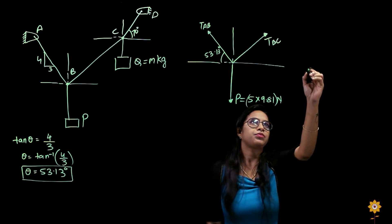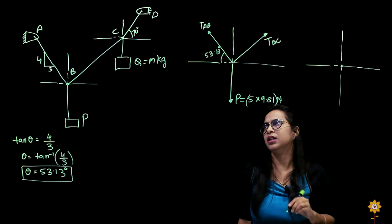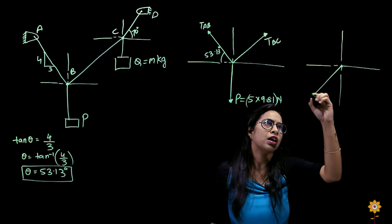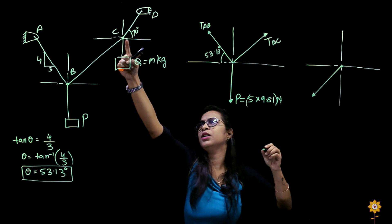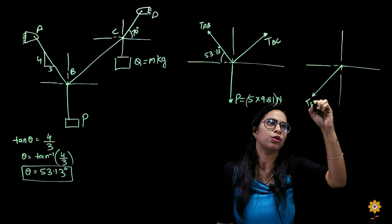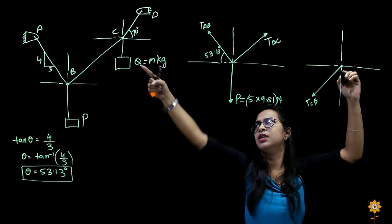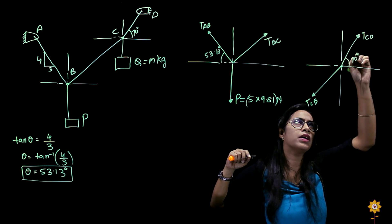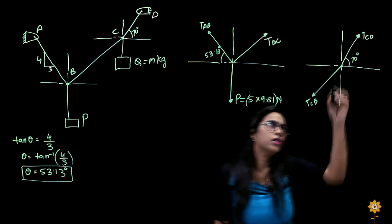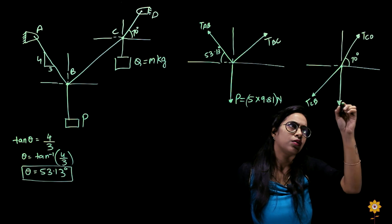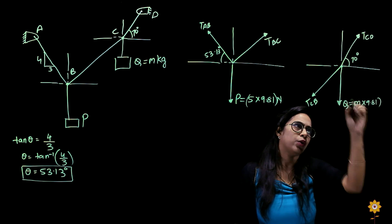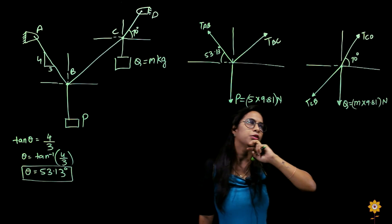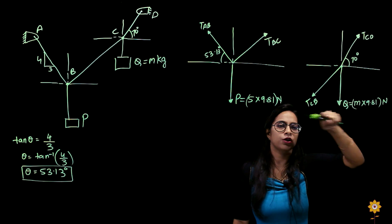Now for point C — this is my point C. I have one chord here BC which is the same chord as TBC; from here it is TCB, but they'll have the same value. Next I have chord CD, that is TCD, which is at 70 degrees as given. And I have Q which is m kg, so it would be m into 9.81 newtons.